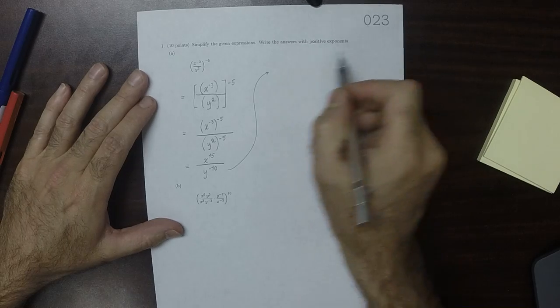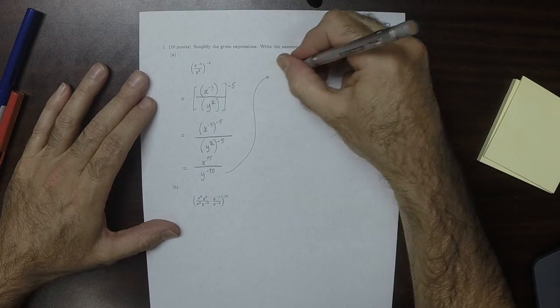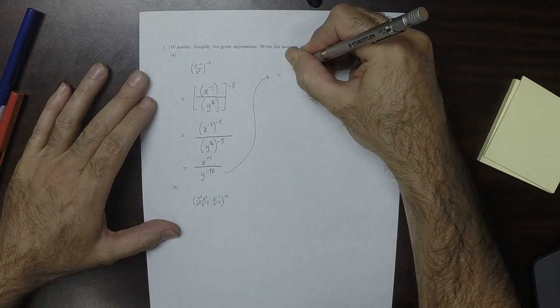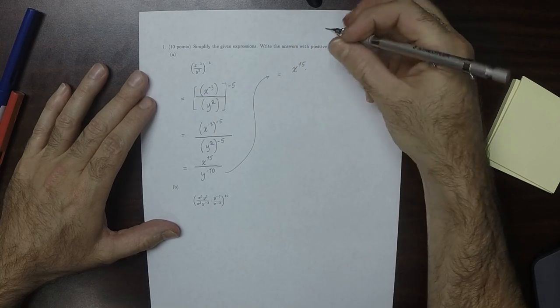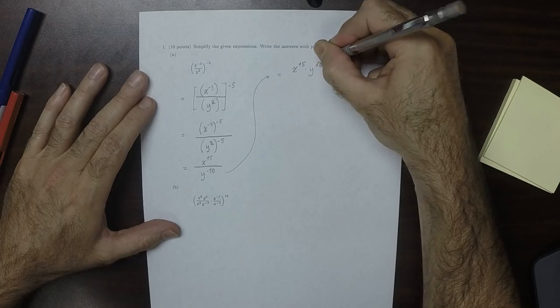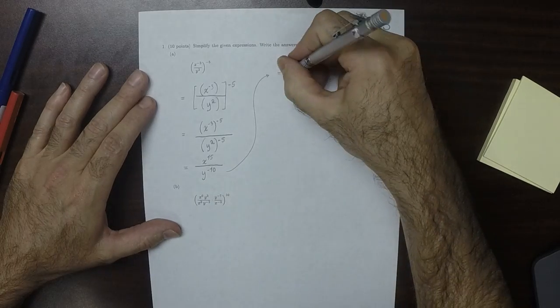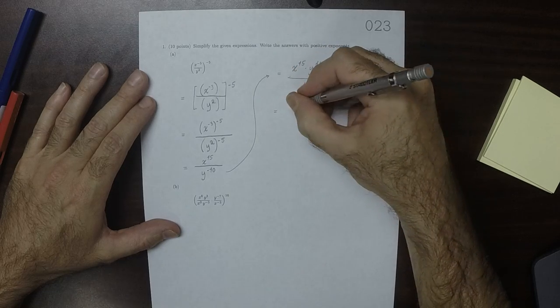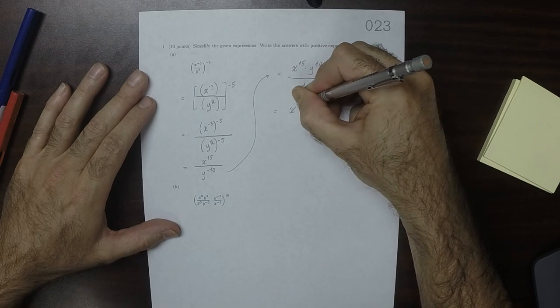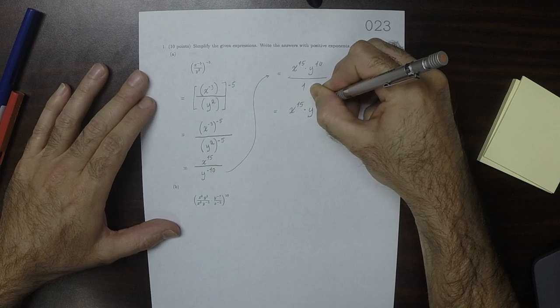And then it says with positive exponents, so this would be x to 15 times y to 10, moving those up to the numerator over 1, which of course you could just write as x to 15 times y to 10.